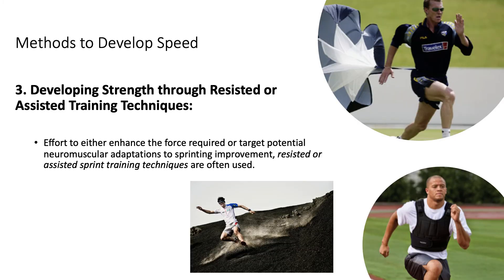The third method to develop speed is developing specific strength through resisted or assisted training techniques. In the second method, the athlete developed eccentric strength; now strength is trained through running-specific movement patterns to develop sprint-specific strength. Resisted training means wearing weighted vests, using parachutes, or doing hill climbs — adding resistance to speed and then having the person sprint.